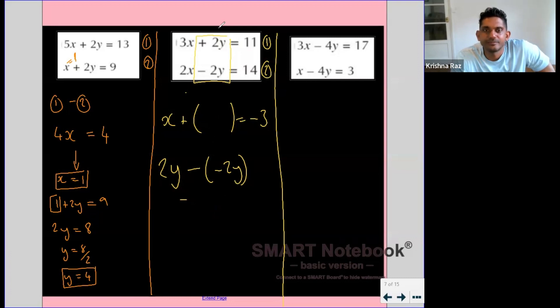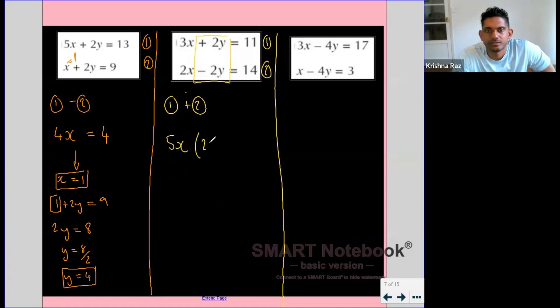So instead of subtracting the equations, what would have happened if we added the equations together? We'd have had 5x, 2y plus minus 2y equals 25.